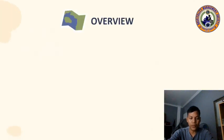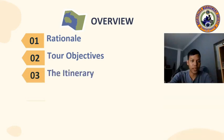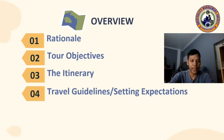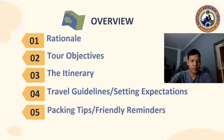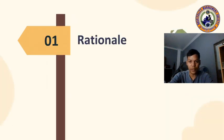Before I dig into the details, I will discuss the overview of this orientation. There are six topics we are going to talk about: first is the rationale, next the tour objectives, third the itinerary, fourth the travel guidelines or setting expectations, fifth the packing tips or friendly reminders, and lastly the hazard identification, risk assessment, and precautionary measures. Let's start with the rationale.